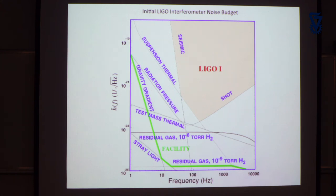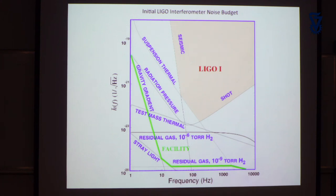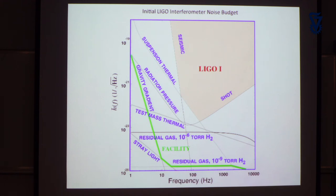Gravity gradient noise is dramatic: you can always do very well getting rid of seismic noise because seismic noise is an acceleration with respect to the inertial frame, and you can use seismometers and accelerometers — F=ma is a wonderful equation — to find out when you are moving with respect to the inertial frame. But what you can't shield against is this: the same things that cause accelerations also cause density fluctuations in the ground.